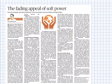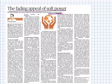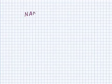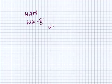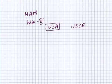The next article is regarding the fading appeal of soft power and India's foreign policy. One important thing we should know is the Non-Aligned Movement. We should know the background for the formation of NAM. After World War II, the USA and USSR emerged as major powers, and countries aligned with one or the other.